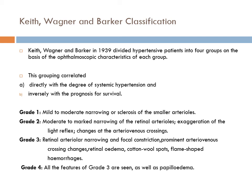Keith-Wagener grades: Grade 1 — mild to moderate arteriolar narrowing or sclerosis. Grade 2 — moderate to marked narrowing of arterioles, exaggeration of light reflex, and changes at AV crossings. Grade 3 — arterial narrowing, focal constriction, prominent AV crossing changes, with additional edema and cotton wool spots or flame-shaped hemorrhages. Grade 4 — all Grade 3 features plus papilledema.